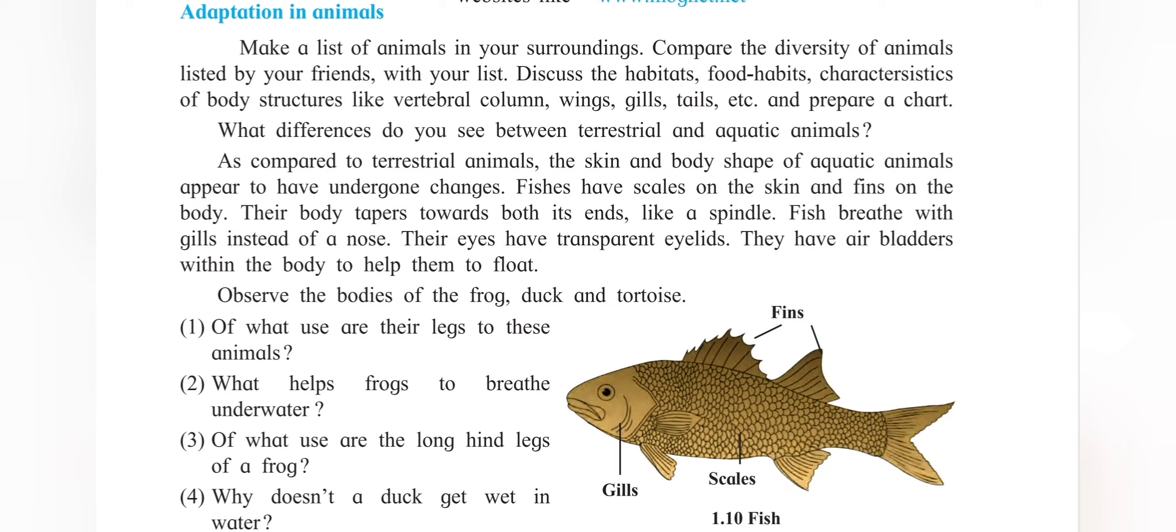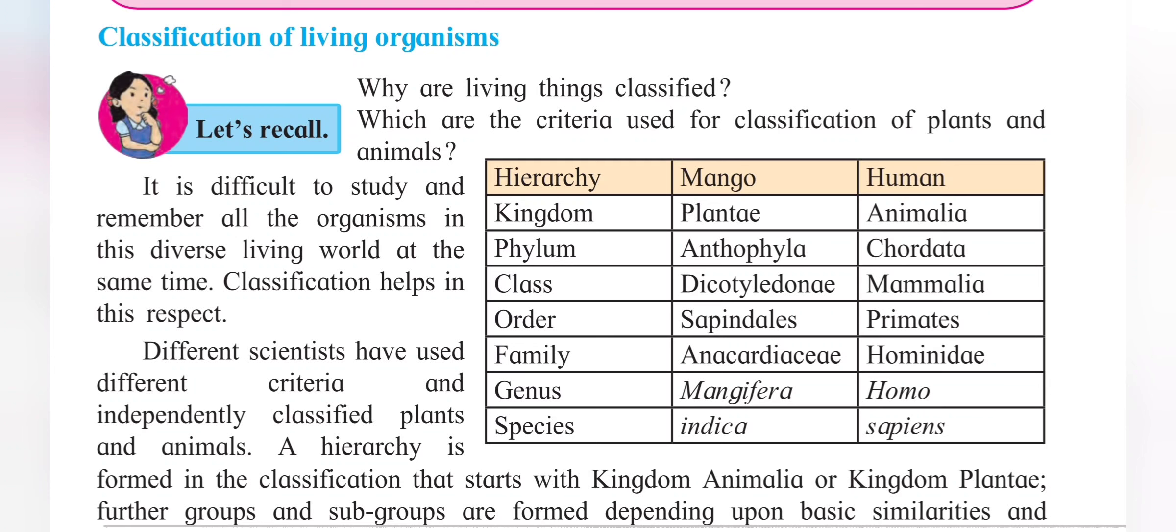Kingdom, phylum, class, order, family, genus and species. This is called the hierarchy of classification which was displayed by Charles Darwin, the scientist who gave the theory of survival of the fittest.